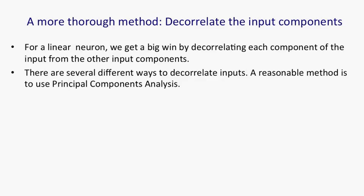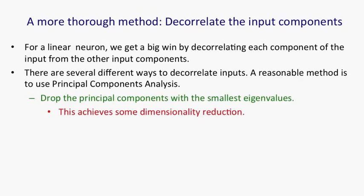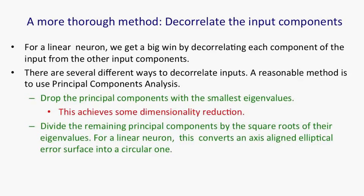There's actually many ways to decorrelate things. For those of you who know about principal components analysis, a very sensible thing to do is apply principal components analysis, remove the components that have the smallest eigenvalues, which already achieves some dimensionality reduction, and then scale the remaining components by dividing them by the square roots of their eigenvalues. For a linear system, that will give you a circular error surface. If you don't know about principal components, we'll cover it later in the course.